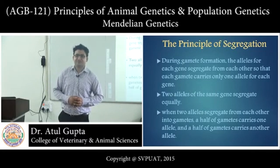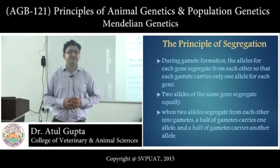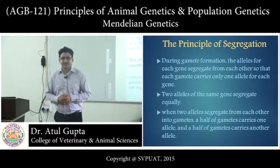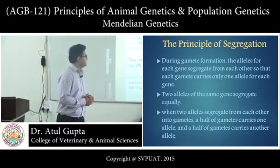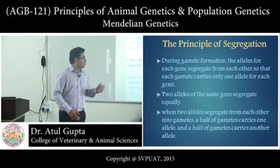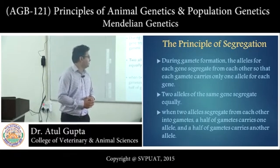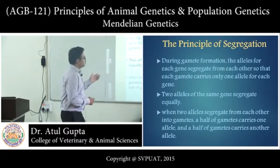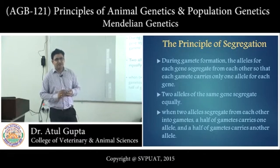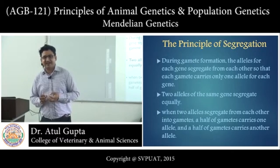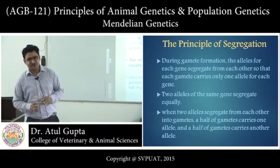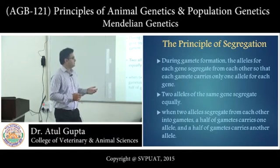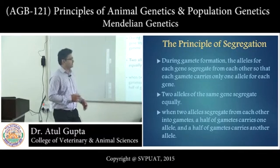The first principle of Mendel is the principle of segregation. It states that during gamete formation, the alleles for each gene segregate from each other so that each gamete carries only one allele for a gene. Two alleles for a gene segregate — that is, separate — during gamete formation, so half of the gametes carry one allele and half carry the other allele.